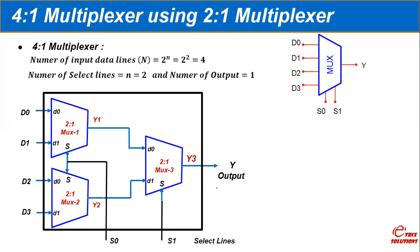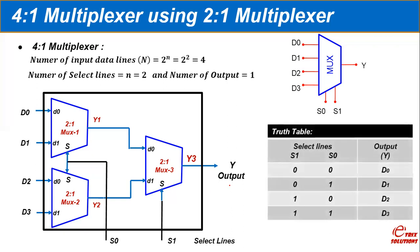This is the truth table of a 4x1 multiplexer. There are two selection lines, and two selection lines can have four binary combinations. For each combination, a particular input data line is selected to the output. Let us apply these combinations to this multiplexer tree and verify whether the output matches this truth table.